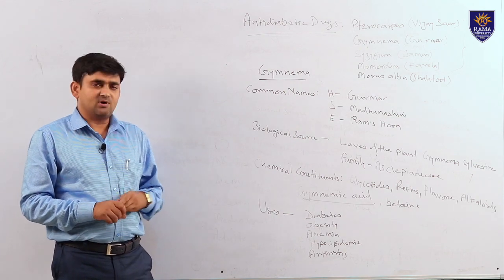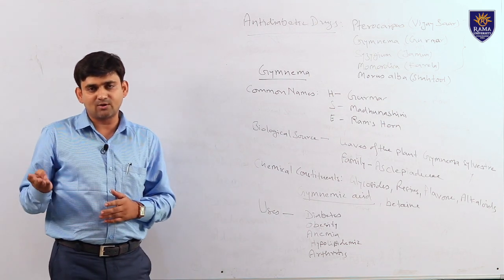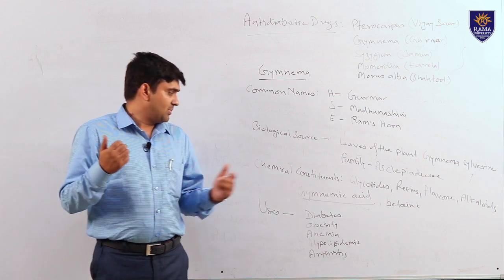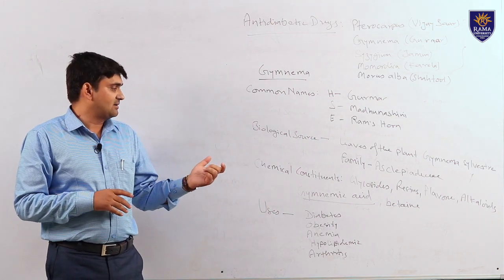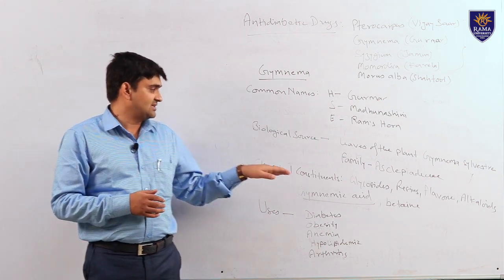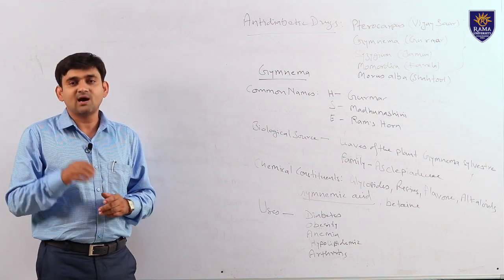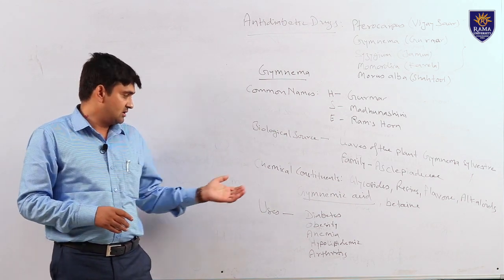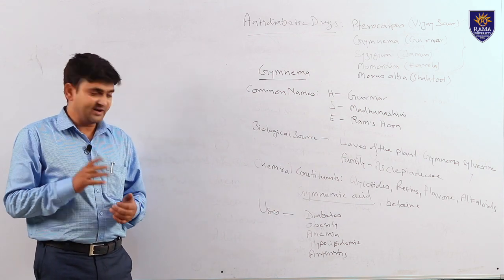Chemical constituents: almost all categories of phytoconstituents are obtained from the drug — glycosides, alkaloids, flavones, resins — but the chief active constituents responsible for antidiabetic activity are gymnemic acids. Gymnemic acid is responsible for anti-hyperglycemic effect. The drug is used to cure diabetes, reduce obesity, treat anemia, reduce blood cholesterol levels as a hypolipidemic drug, and in arthritis.